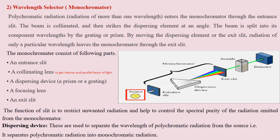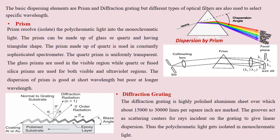The dispersing device, as discussed earlier, is a prism or grating. A prism resolves polychromatic light into monochromatic light. In low-cost instruments, prisms are generally used. The prism is made up of either quartz or glass. Glass prisms are used in the visible region, while quartz prisms are used for both ultraviolet and visible regions. The dispersion of a prism is good at short wavelengths but poor at longer wavelengths.